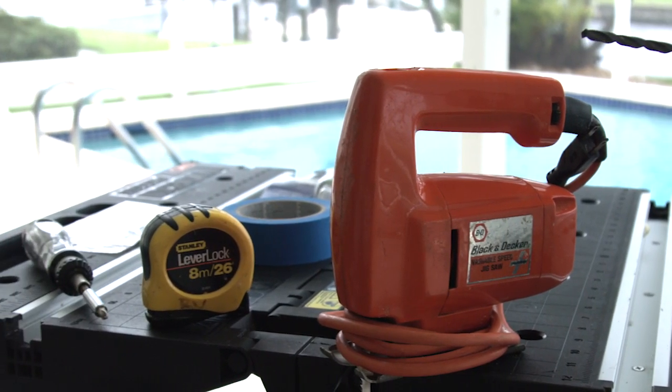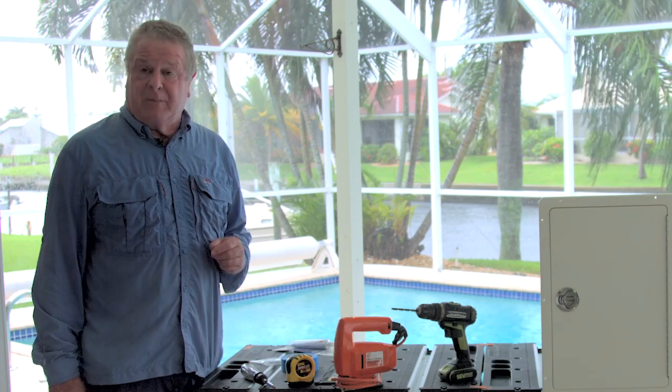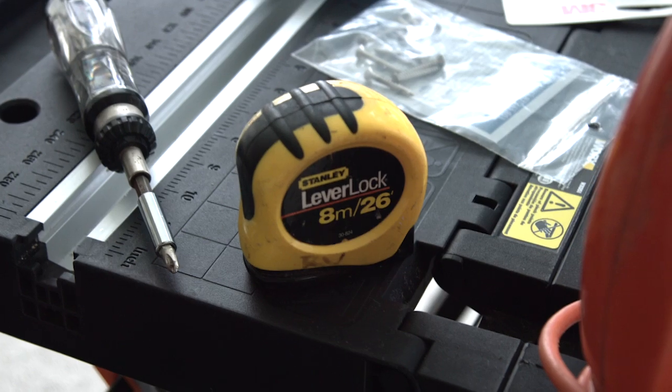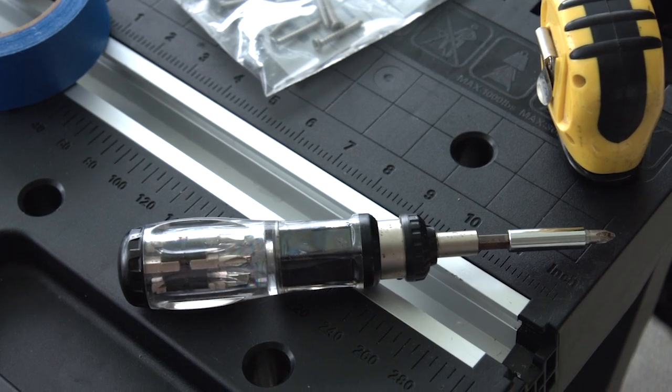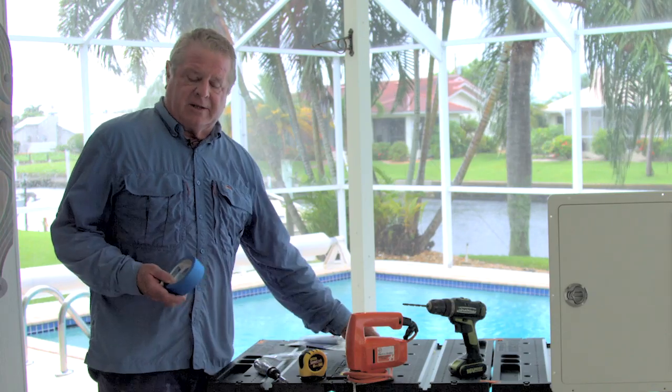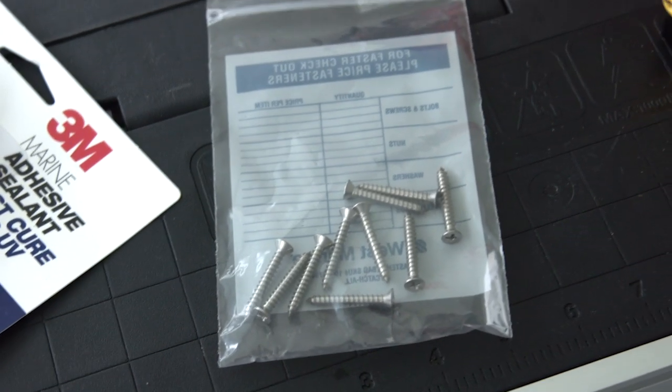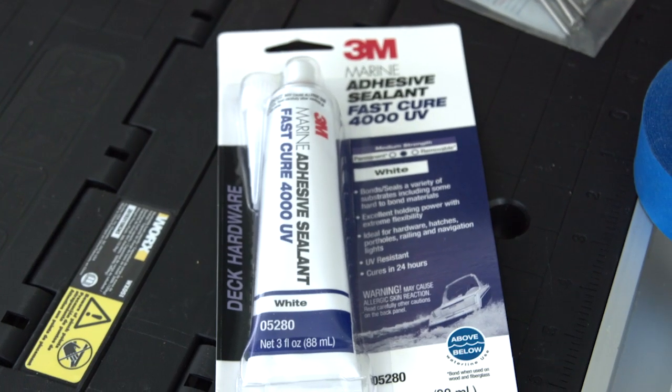Now the tool list is simple and if you don't have them, find a buddy that doesn't have a boat and take him fishing. You'll need a drill, a jigsaw, a tape measure, a screwdriver, and then you're going to need a few supplies: some painters tape, a marking pencil, stainless steel screws to fasten the device, and some adhesive.